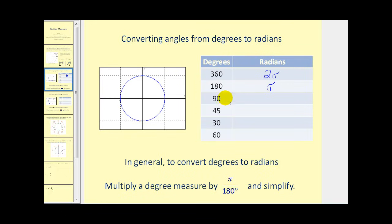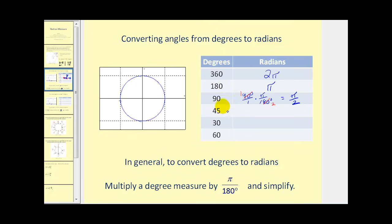Let's show the 90-degree conversion by hand. We put 90 degrees over one and multiply it by pi over 180 degrees. Simplifying: 90 simplifies, 180 simplifies to two, the units of degrees cancel out, and we are left with pi over two radians. Similarly, 45 degrees is half of 90 degrees, so half of pi over two would be pi over four radians.